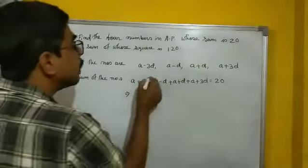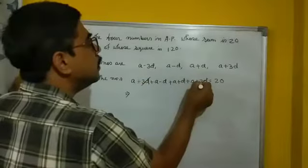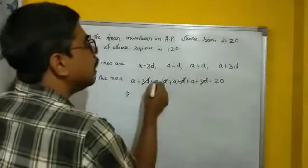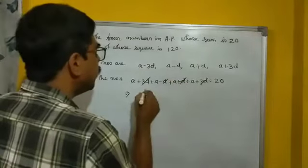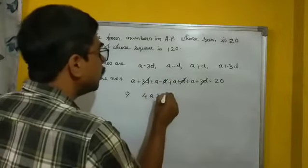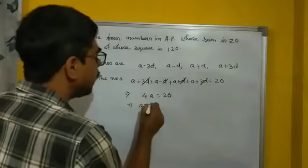Now you can cancel this 3D, D cancel, A, A, A, how many A? 4A. 4A equal to 20, or A becomes 5.